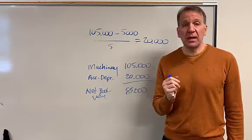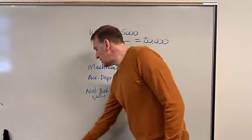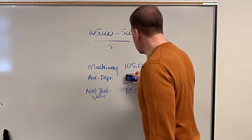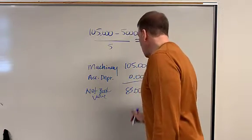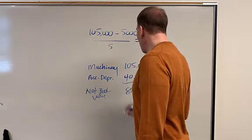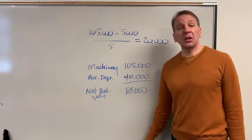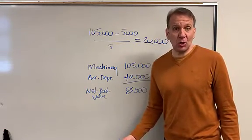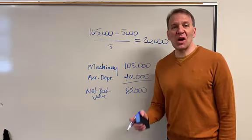At the end of year two, what happens? Remember we do the same journal entry, but this accumulated depreciation already had $20,000 in it. So when we do $20,000 more the next year, it accumulates, hence the name accumulated depreciation.